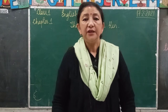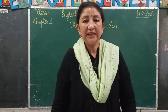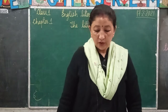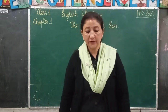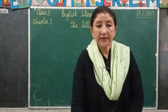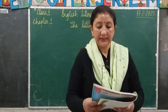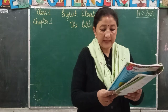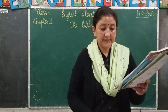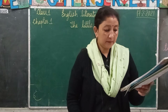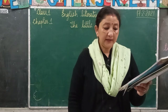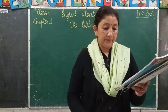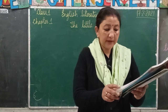Good morning children. Today for English Literature, English 2, we'll do a new chapter. We'll do a story on a little red hen. I will read the story first, then I will explain it to you. Now once upon a time, there were four friends who lived on a farm — a hen, a cat, a duck and a rat. Let us find out more about them.